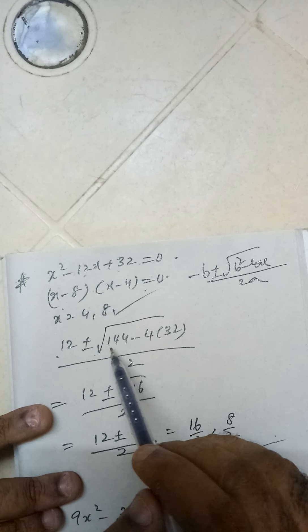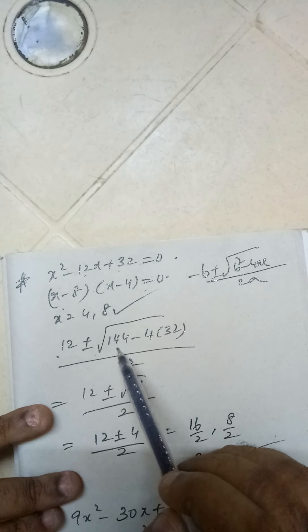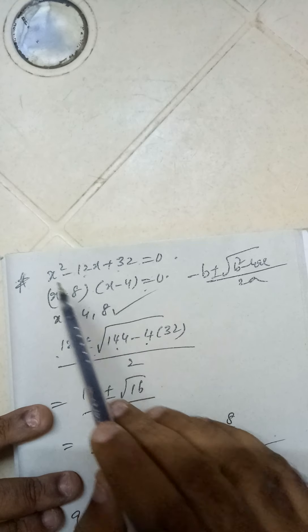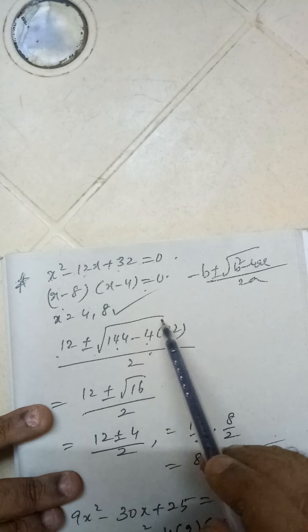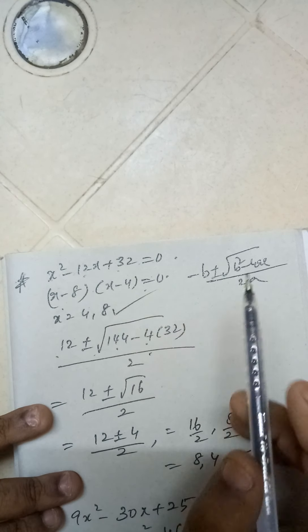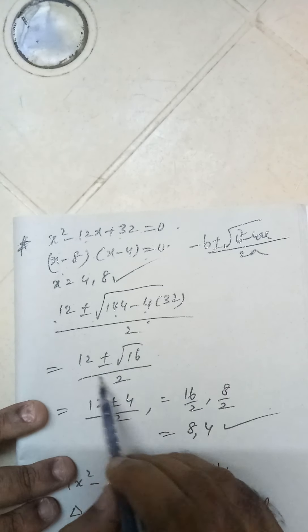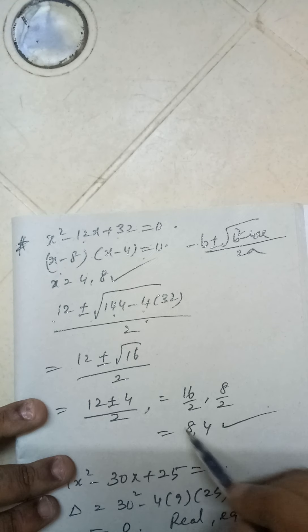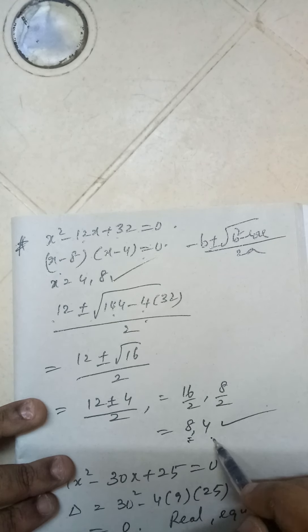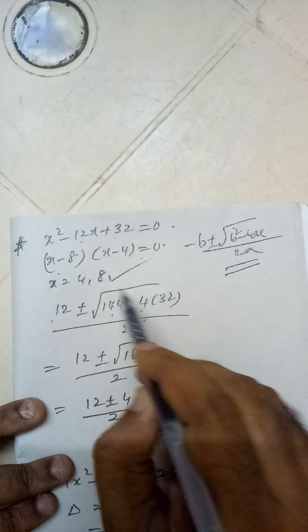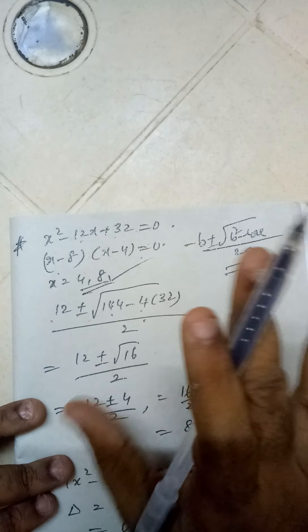If you do that: -b ± √(discriminant value) / 2a. b² = 144, minus 4×a×c, where a = 1 and c = 32. So if you solve this, you get (12 ± √16) / 2. And when you solve, you get 8 and 4.